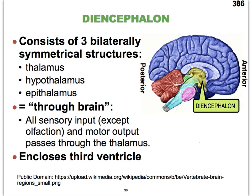In the case of the diencephalon, these three subparts include the thalamus, the hypothalamus, which sits anterior and slightly underneath the thalamus, or below the thalamus, and the epithalamus, which sits on top of the thalamus.